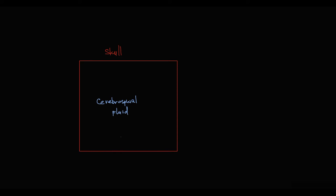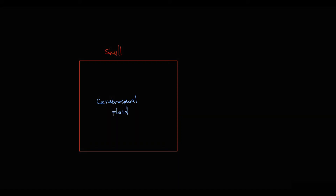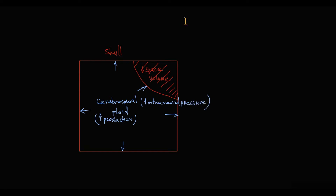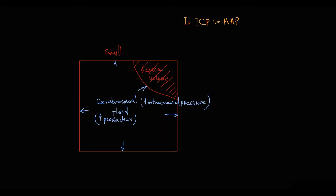The mechanism of the Cushing reflex begins with acute head injury causing increased intracranial pressure. The concept is that cerebrospinal fluid is located in a closed space surrounded by the skull, so fluid can't rapidly leave nor distend this space. If, due to acute head injury, there is an increase in CSF production or decrease in space volume, it inevitably leads to increased intracranial pressure.